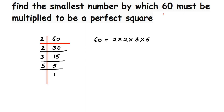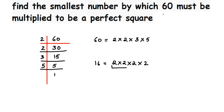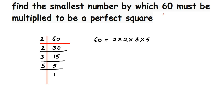For a perfect square, the prime factors must be in proper pairs. For example, 16 = 2×2×2×2 — you can see two pairs of 2. Now looking at 60 = 2×2×3×5, I have one pair of 2, but 3 and 5 have no pairing. To make 60 a perfect square, I need one more 3 and one more 5 so that all prime factors form complete pairs.